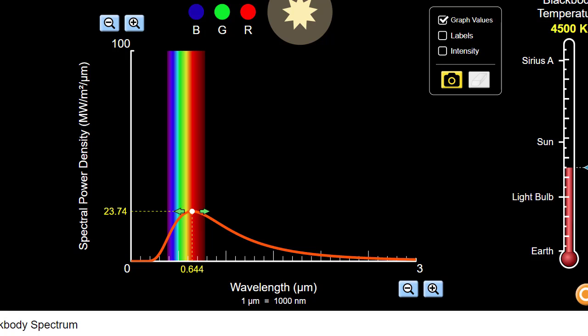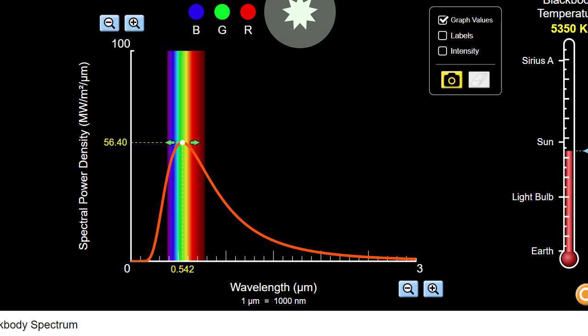Now watch what happens to the wavelength and the peak when I increase the temperature to say 5500K. I go all the way up to 5500K, and you can see that the peak has increased.